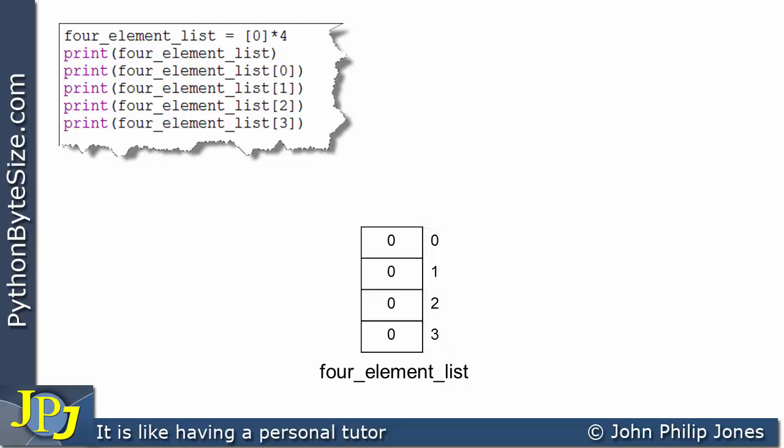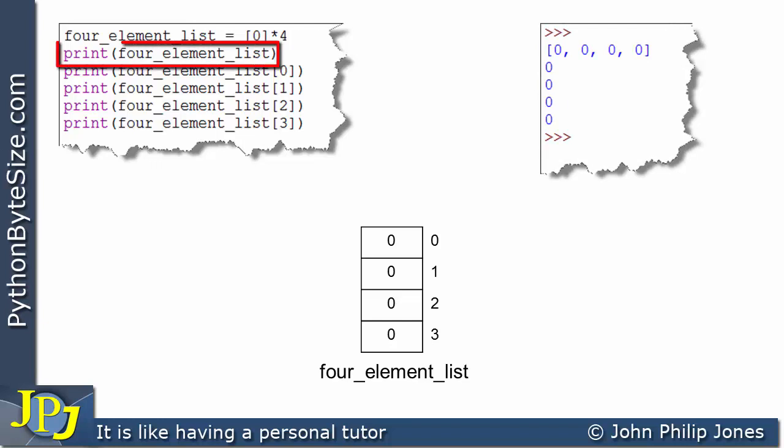Let's consider the runtime for this computer program and we will get this. Now this line is responsible for outputting this, which you can see is the entirety of the list. This line is responsible for outputting one of the elements, and it's responsible for outputting the element with this index position, which is this one here. So the zero is placed here.